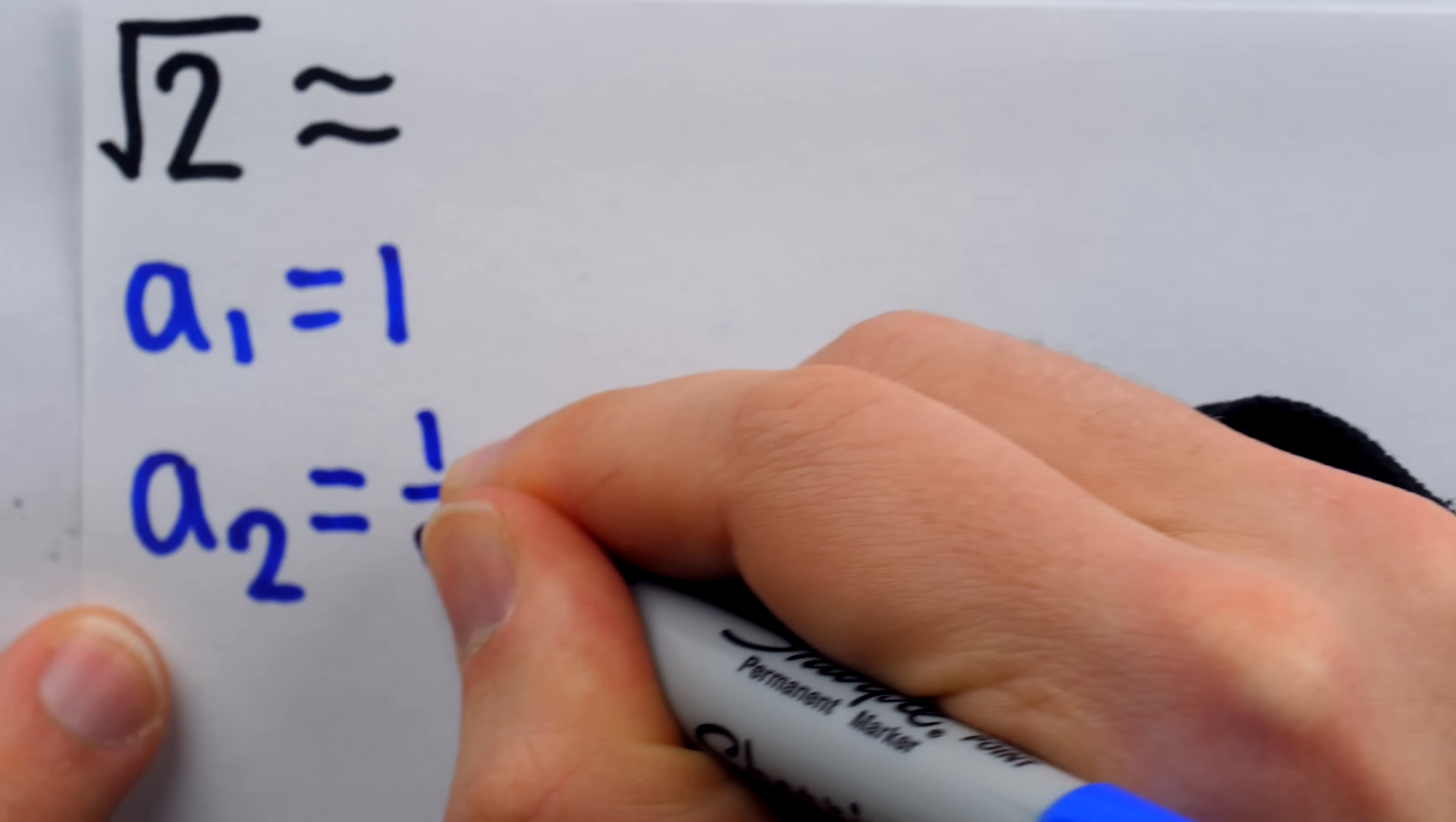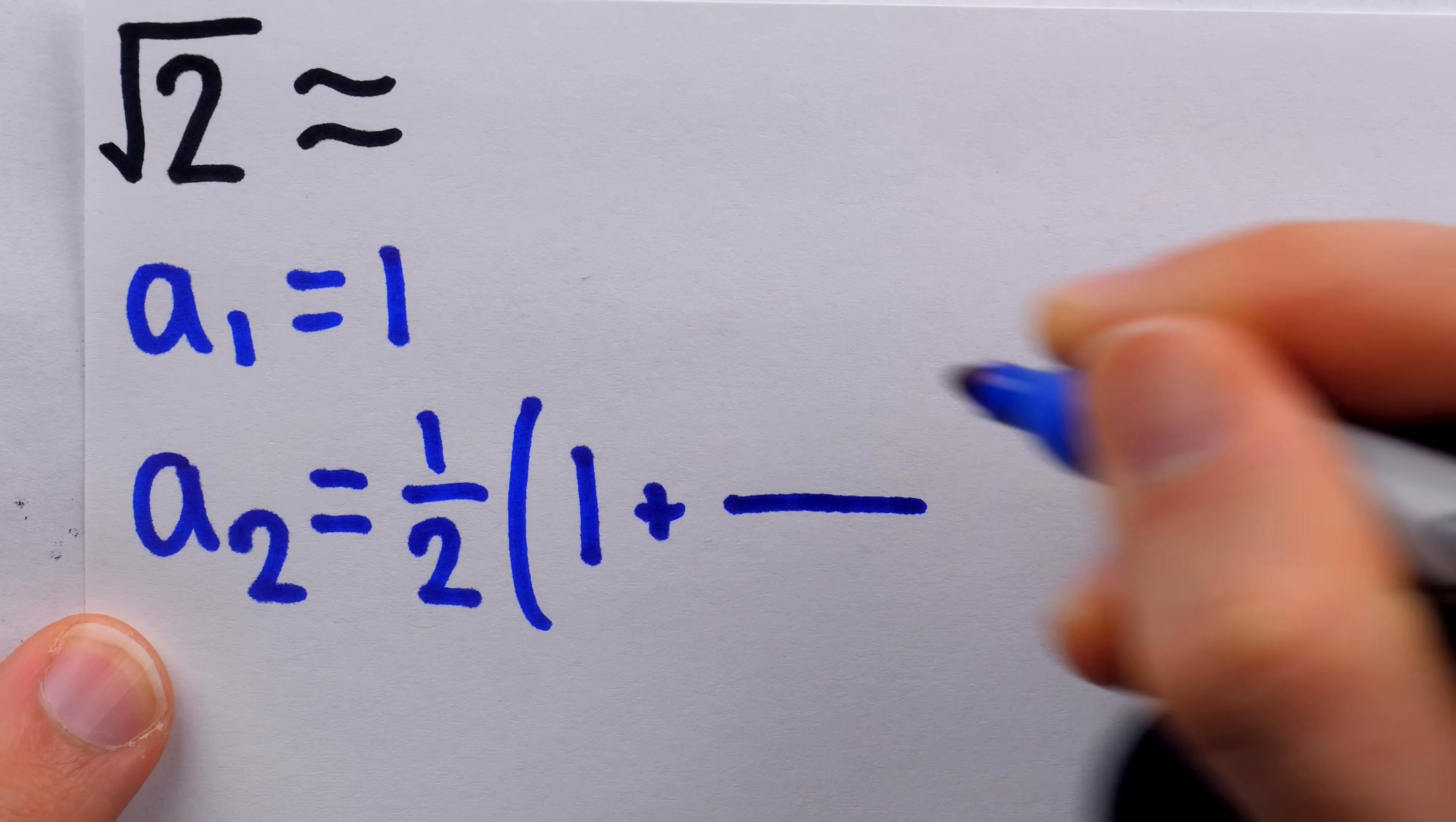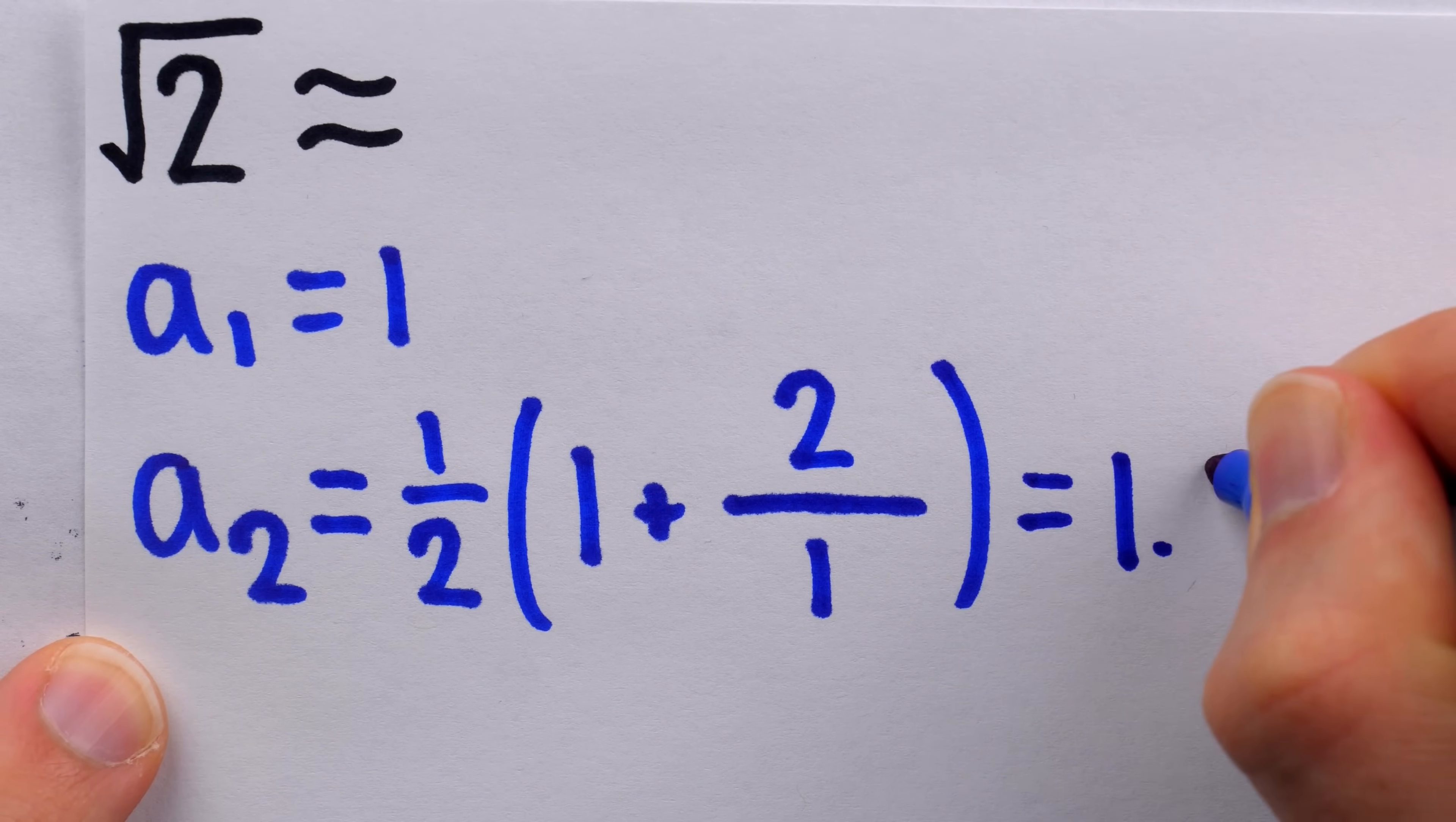Then, Heron's method tells us how to get a better approximation to the square root of 2 using our first guess. We have to calculate 1 half multiplied by the previous guess, which was 1, plus the number whose square root we are trying to approximate, which is 2, divided by the previous guess, which is 1. This is 1 plus 2 multiplied by a half. That's 1 half of 3, which is 1.5.